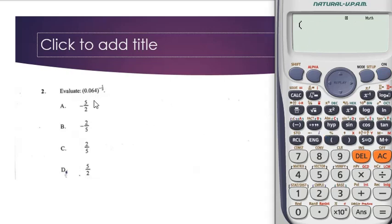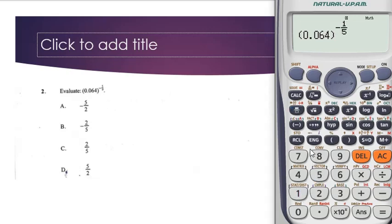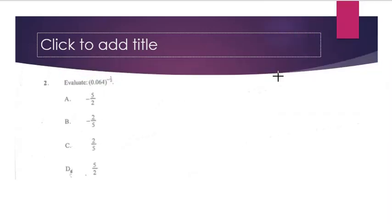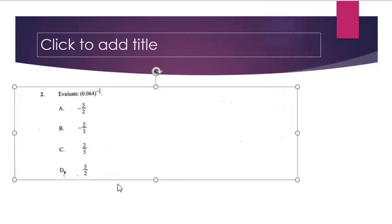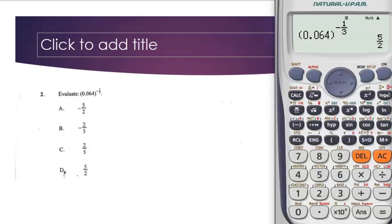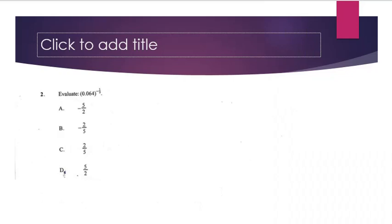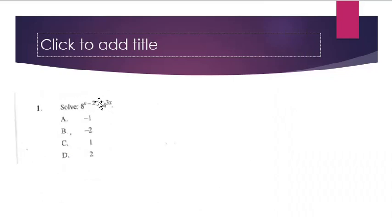For this question: enter (0.064), close bracket, exponent, then minus 1 over 3. Initially I tested minus 1/5 and got 1.73, confirming the exponent is actually minus 1/3. Punching in (0.064)^(-1/3) gives the correct answer of 5/2, which is 2.5. The correct answer is D.